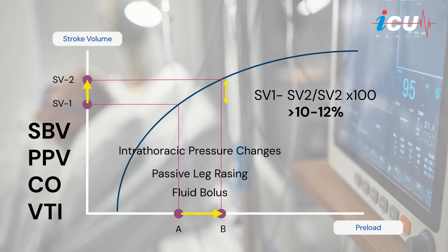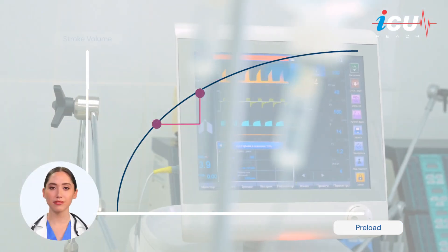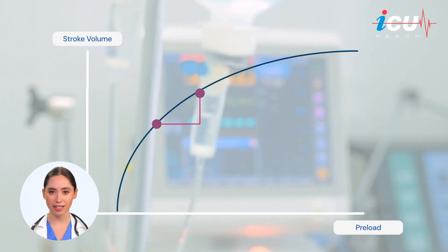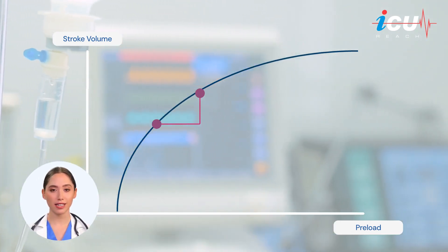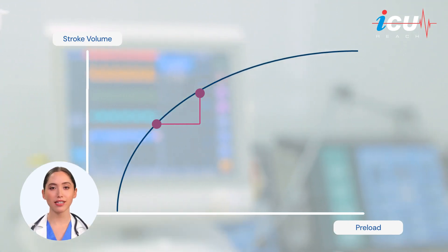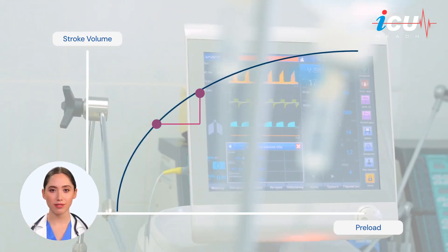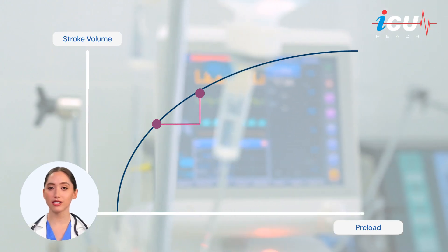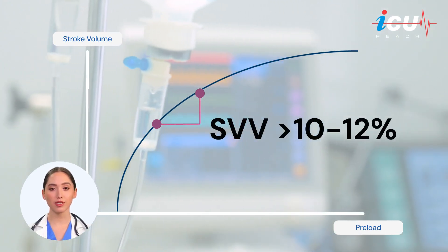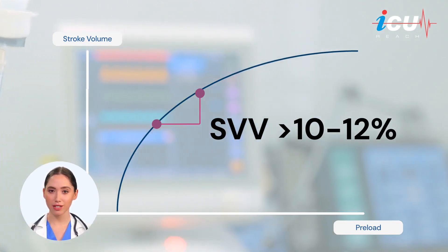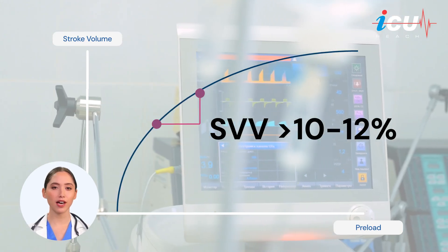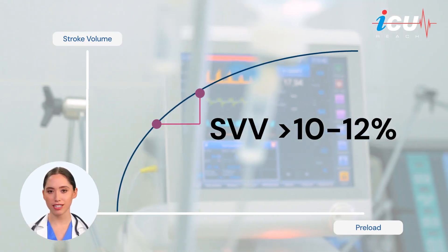These measurements help predict whether increasing preload with fluids will improve stroke volume. To recap, fluid responsiveness is about finding that sweet spot on the Frank-Starling curve where an increase in preload would predict an increase in stroke volume. This can be assessed by looking at stroke volume variation with respiratory movements or passive leg raising, by at least 10%. Using dynamic assessments can help guide these critical decisions in the ICU.